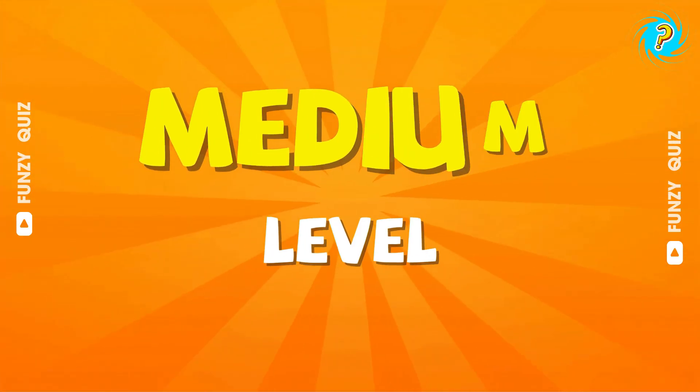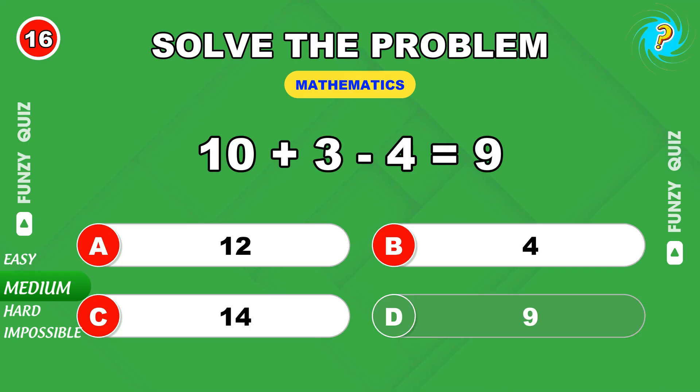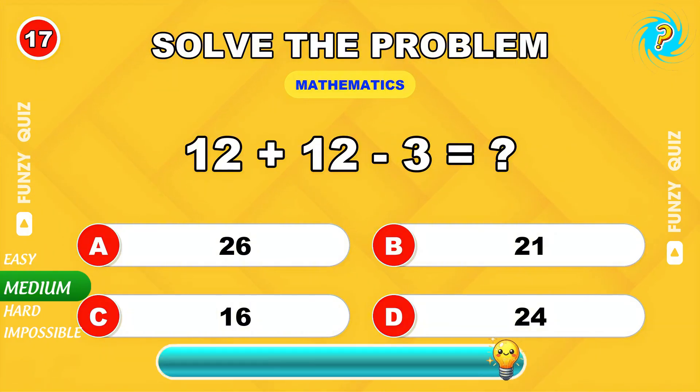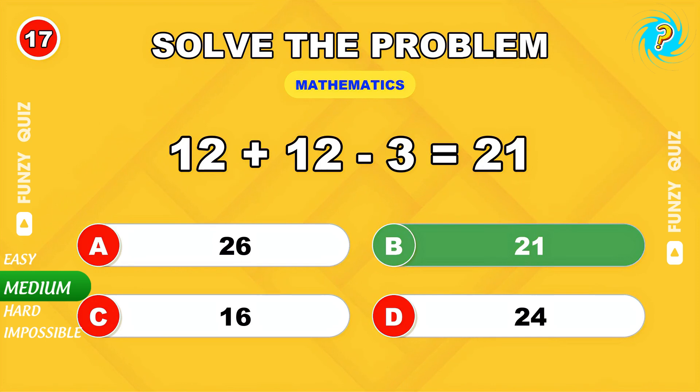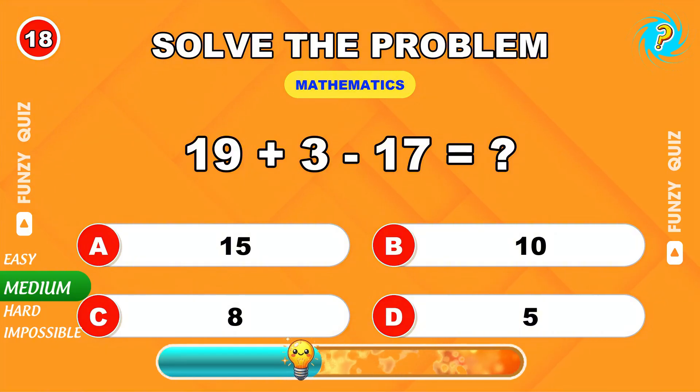Here we go for the medium level. 10 plus 3 minus 4. 9. 12 plus 12 minus 3. 21. 19 plus 3 minus 17. 5.